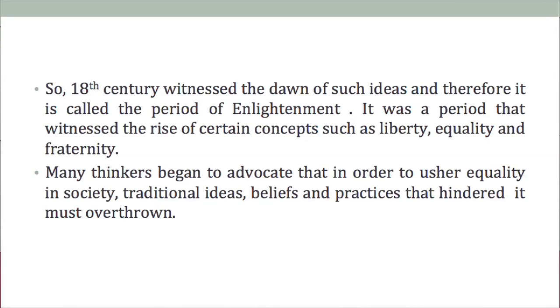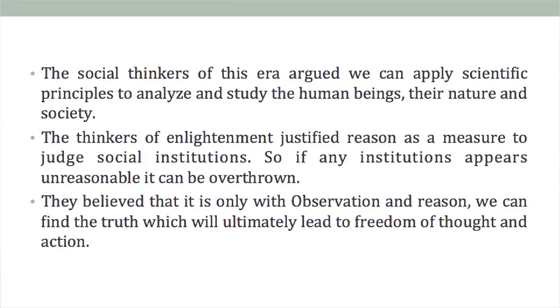Many thinkers began to advocate that in order to usher equality in society, traditional ideas, beliefs, and practices that hindered social equality must be overthrown. Social thinkers of this era argued that we can apply scientific principles to analyze and study human beings, their nature, and society. The thinkers of the Enlightenment justified reason as a measure to judge social institutions — if any institution appears unreasonable, it can be overthrown. They believed that it is only with observation and reason that we can find the truth, which will ultimately lead to freedom of thought and action.